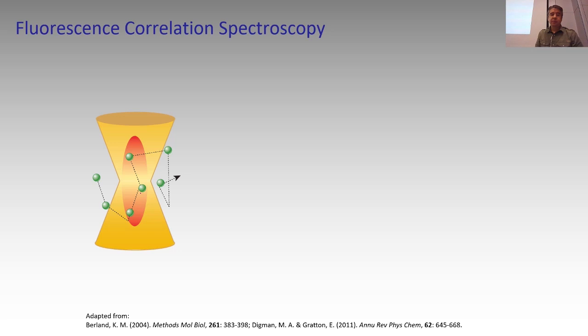This volume is not symmetric — it's symmetric in the x-y direction, but in the z-direction, which is the axis along which the objective is detecting, it's longer than in the x- and y-directions.